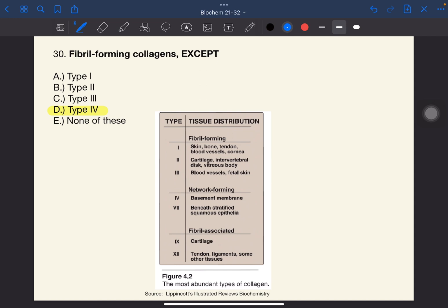Under these types are type 1, 2, and 3. For network forming, instead of forming fibrils, they form a mesh. Under this is type 4 and 7. My mnemonic for this one is network 47. And lastly, the fibril-associated collagen, these bind to the surface of collagen fibrils, linking the fibrils to one another and also to other components in the extracellular matrix.